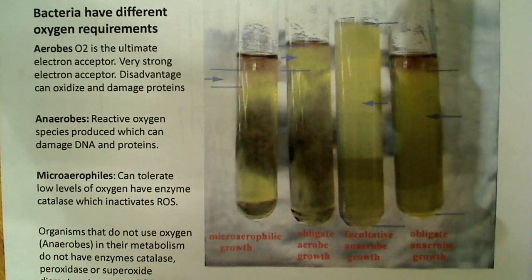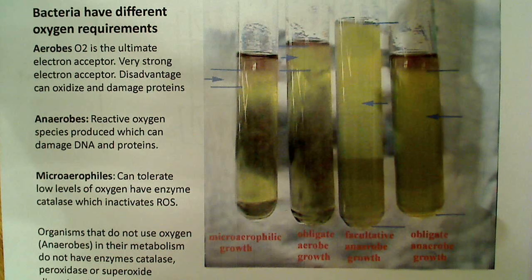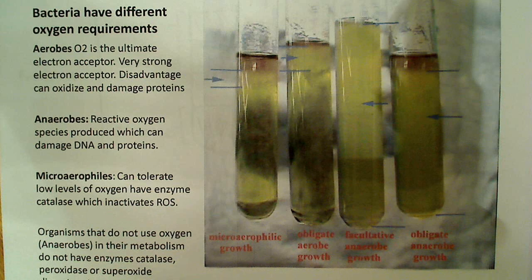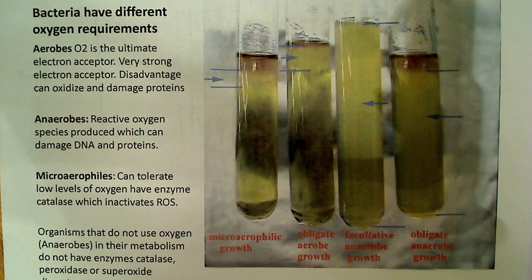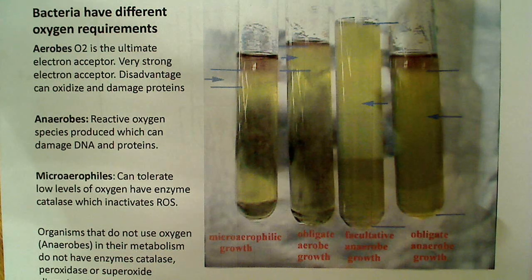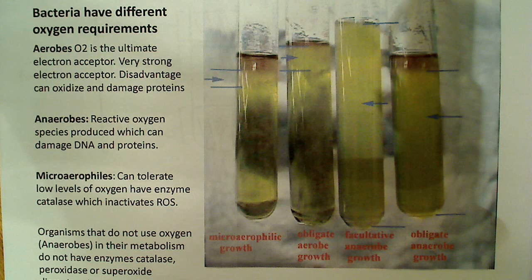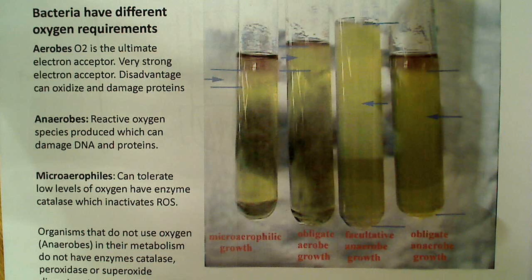Aerobic organisms use O2 as the final electron acceptor. It's a very strong electron acceptor but it also comes with an important disadvantage - it can create reactive oxygen species and these reactive oxygen species can lead to the damage of proteins, specific and special enzymes, damage DNA, etc.